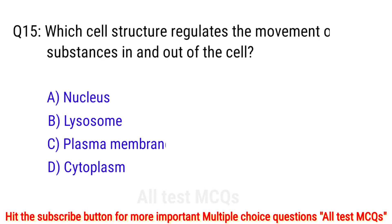Question number 15. Which cell structure regulates the movement of substances in and out of the cell? The right answer is option C: plasma membrane.